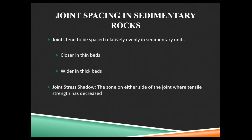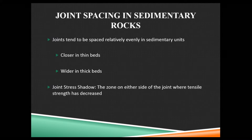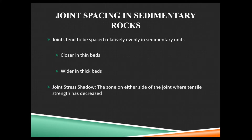Now, joint spacing. If you ever look at a big road cut, big outcrop, big cliff of sedimentary rock, within a given bed there are little vertical joints, and they end up being pretty evenly spaced — which almost seems implausible. How could something in nature end up so evenly spaced? How could those joints in Devil's Tower and Giant's Causeway end up so evenly spaced? Those hexagons are all approximately the same size.